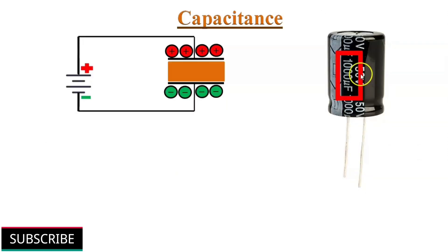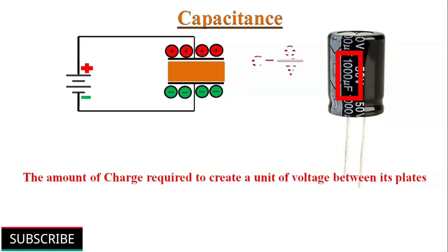On the side of the capacitor, we will find the value of capacitance. It measures the ability of a capacitor to store charge. It is defined as the amount of charge required to create a unit potential difference between its plates. Suppose we give Q coulombs of charge to the plates of the capacitor and it develops V volts between their plates, then its capacitance C equals to Q by V. Capacitance is measured in Farad, represented by letter F.